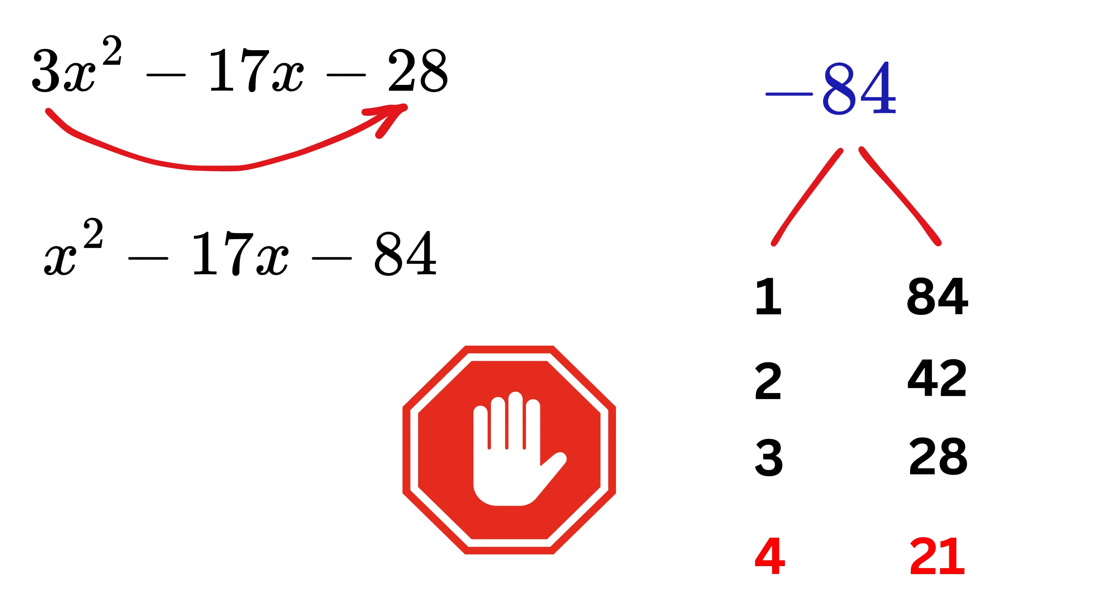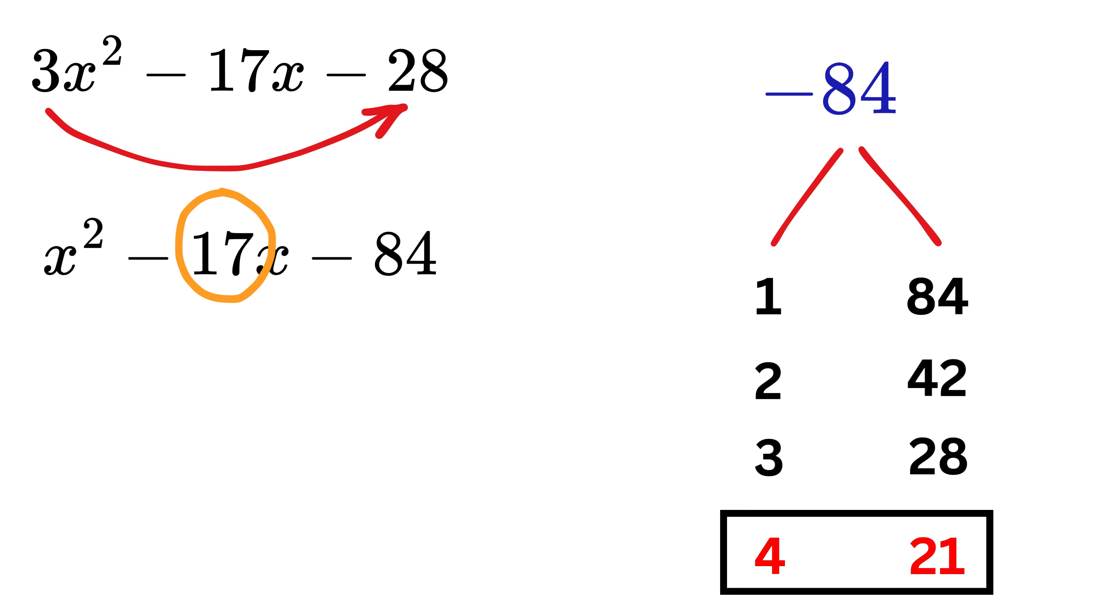Hey, stop here, because 21 and 4 will give 17. Now take 21 and 4 and think which two combinations will give you minus 17. Yes, right. It is possible only when the bigger number is negative. So we have minus 21 and plus 4.